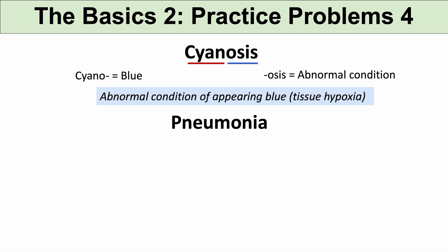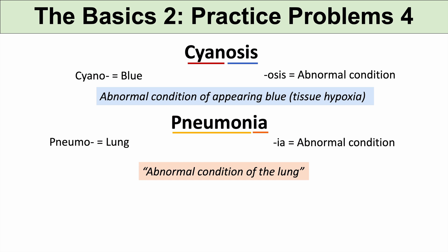The next practice problem is pneumonia. Pneumone or pneumo means lung or air. And ia means abnormal condition. So pneumonia literally means an abnormal condition of the lung.